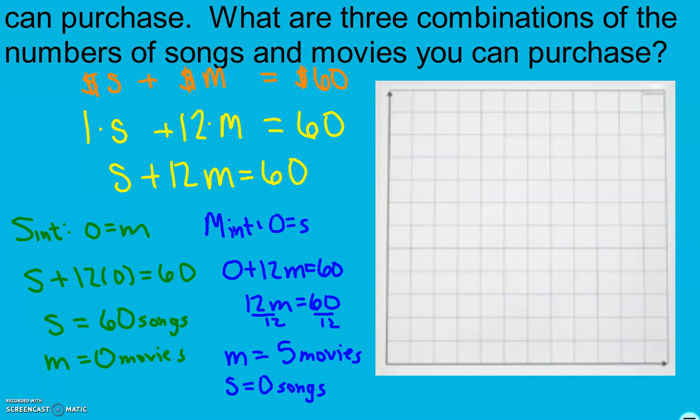Here it does not matter. Songs doesn't necessarily depend on movies and movies doesn't necessarily depend on songs. So it doesn't matter which one we put where. I'm going to go ahead and put songs on the bottom. Which means I'll put movies on the side. Here I need to get all the way to 60 songs. And I have 12 spots. 60 divided by 12 means I'm going to count by 5's here. And that's also where my intercept goes. On my y-axis for movies I only need to get to 5. So here I don't have to change my scale at all. And there is my intercept. I can go ahead and connect these.